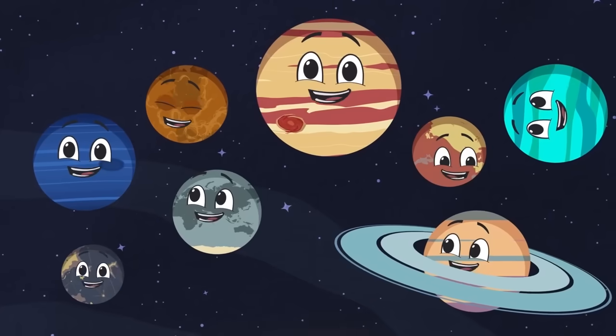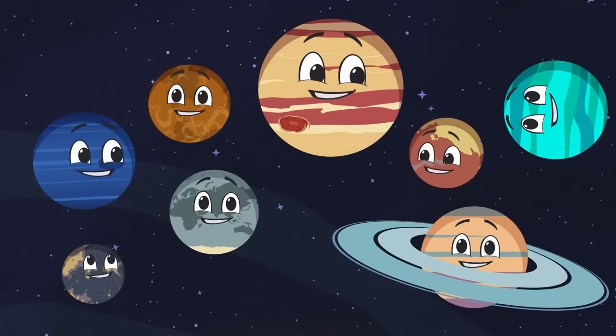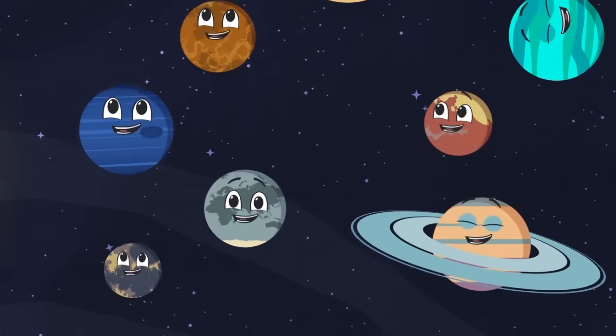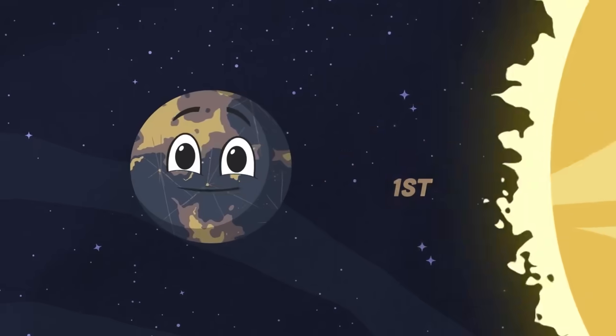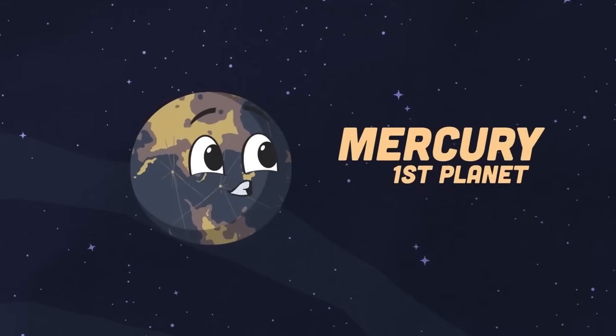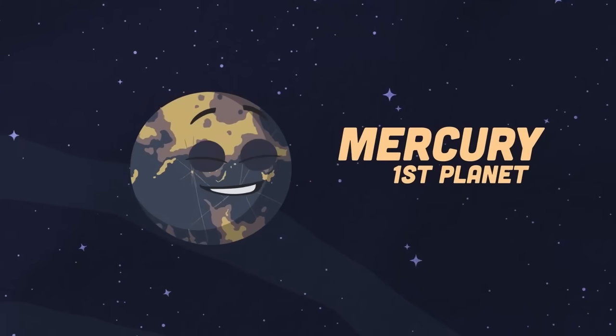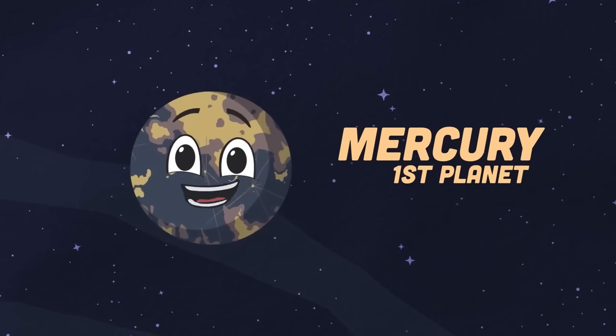We're the eight planets of the solar system, roughly in the same plane as we orbit the sun. My name is Mercury, the first planet from the sun. My shadowed craters have ice, and I'm the second hottest one.